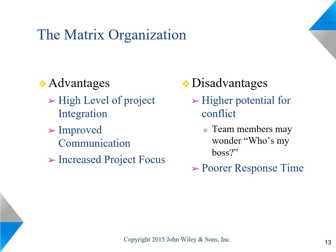What are the advantages and disadvantages of the matrix organization? The advantages include a high level of integration of various functions, improved communication, and improved project focus. The disadvantages include higher potential for conflict because of having two bosses — your functional boss and the project manager — and poor response time because more bosses typically get involved in responding to any questions.